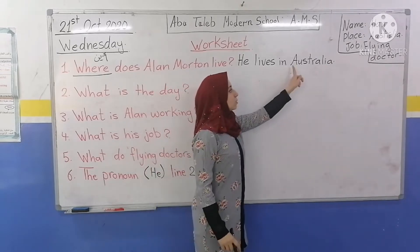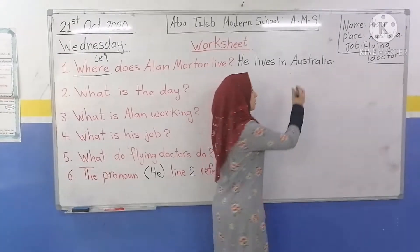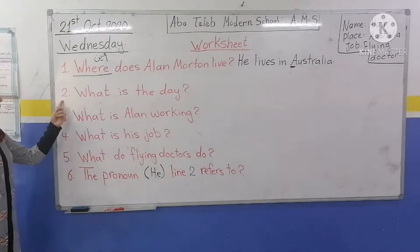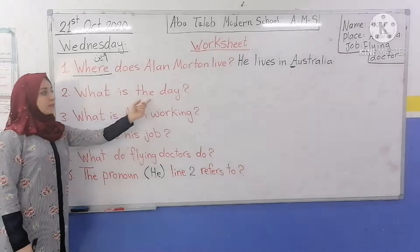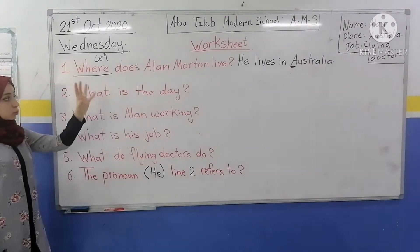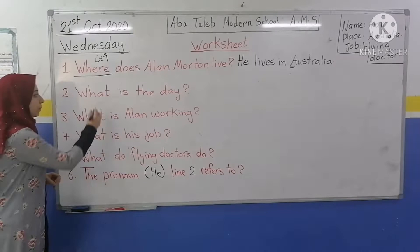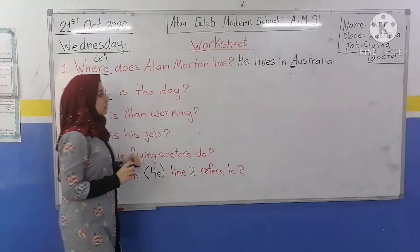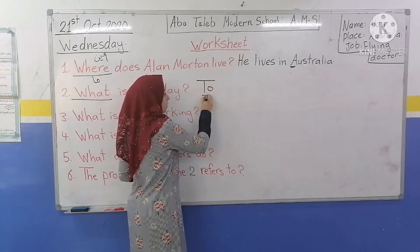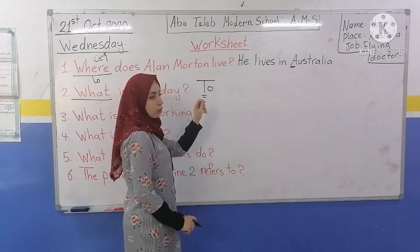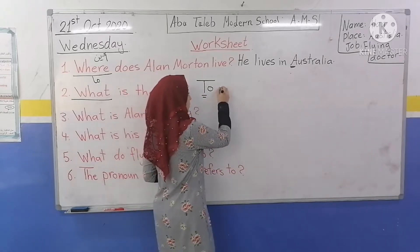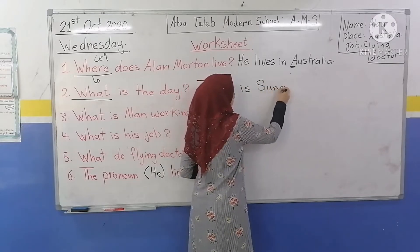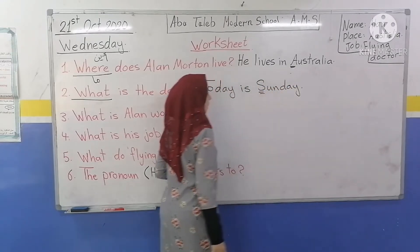We should write Australia with a capital letter because it's the name of a country. Number 2: What is the day? From the text, today is Sunday. Write a capital letter at the beginning of the answer — Today is Sunday, Sunday with a capital letter.